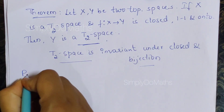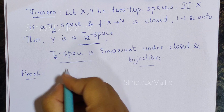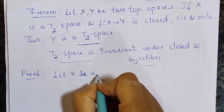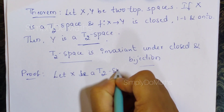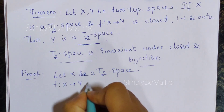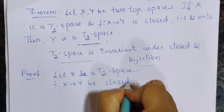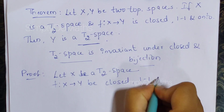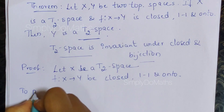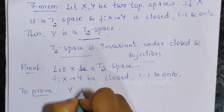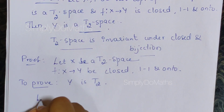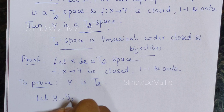Proof: Given that X is a T2 space, and f from X to Y is a function which is closed, one-one, and onto. We need to prove that Y is T2. For this, let's consider any two elements y1 and y2 in capital Y.